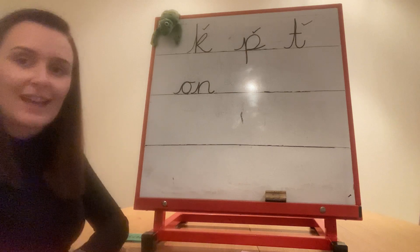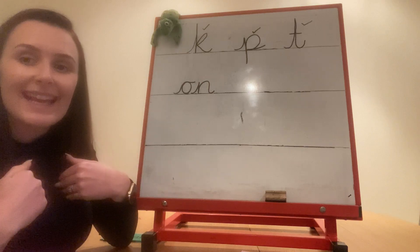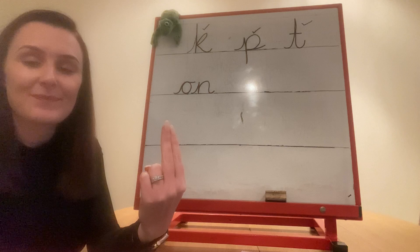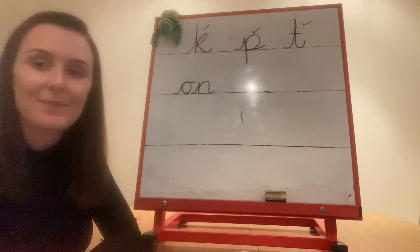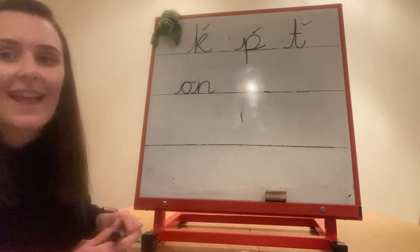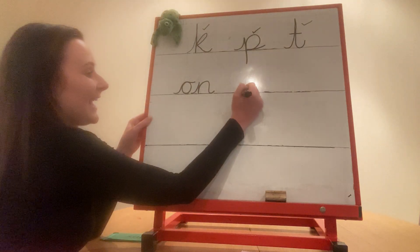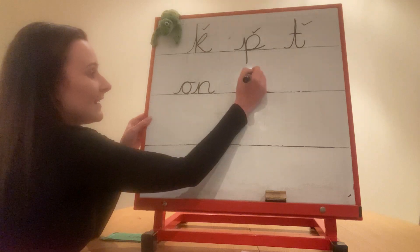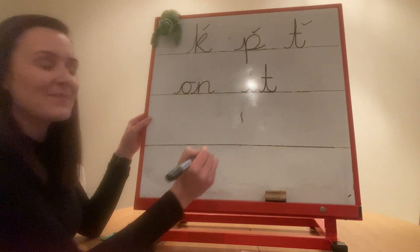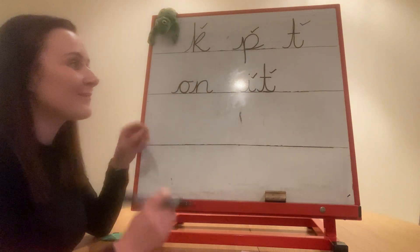Now it's your turn. I'm going to give you a word and you're going to spell it. Ready? It. Get two Fred Fingers, say it and pinch the sounds. Now write it. Have you done it? You can pause the video if you haven't finished. Let's check — it. Give yourself a tick for i and a tick for t, or fix it. Tick or fix.